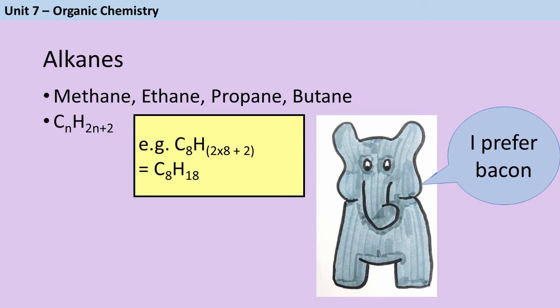They have a general formula of CnH2n+2, so that n could be any number. Say if I was trying to come up with a formula for a bigger alkane, say octane, which you don't need to be able to name, but they could say to you octane has eight carbons in, and you could then look at that formula and say, okay, so 8 times 2 is 16 plus another 2 is 18, so the formula of octane would be C8H18.